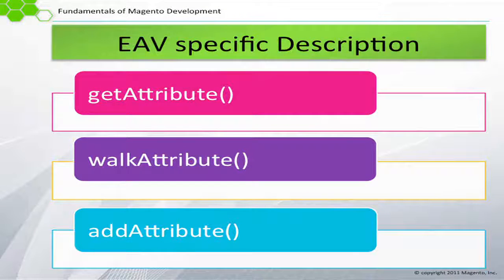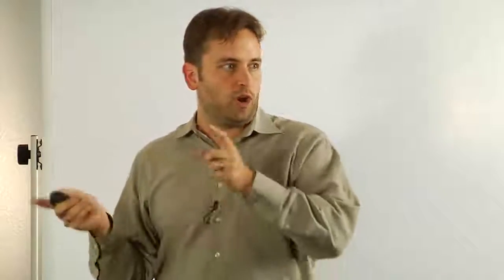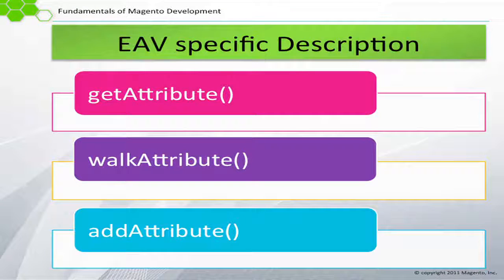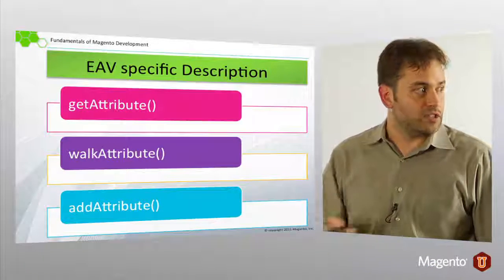Get attribute, walk attribute, add attribute - these are methods you can do through a resource of an EAV entity. Get attribute will actually get you that attribute model, so from there you can find out the meta information: backend, frontend, source, and all sorts of meta information about it. Walk attribute, you can go through and have the callback function. Then add attribute, which would be adding an attribute to that entity. We'll be doing this in just a second.